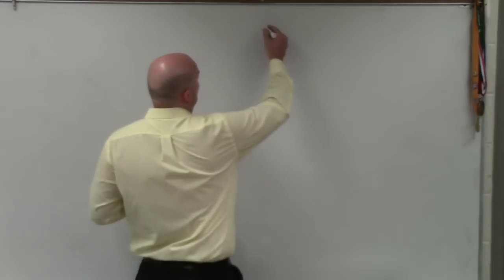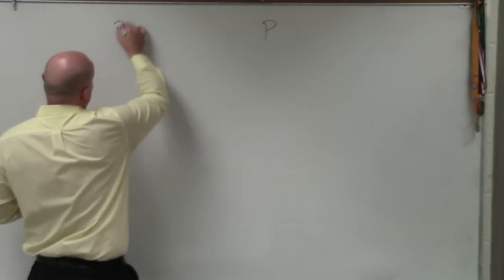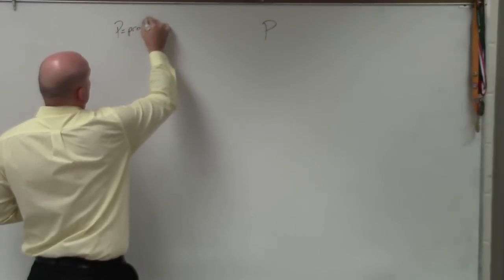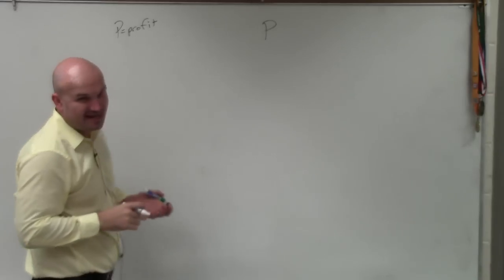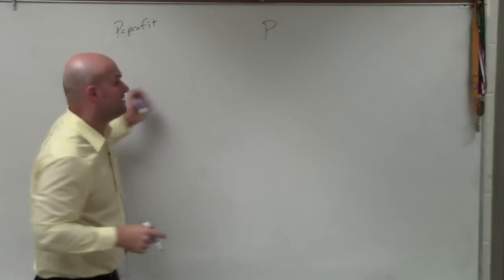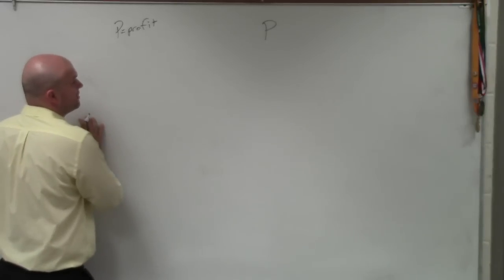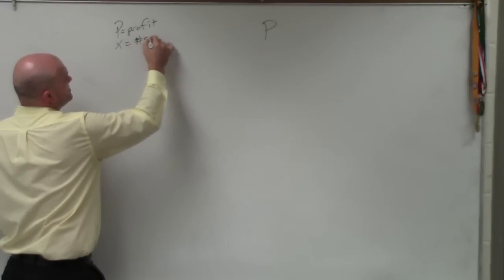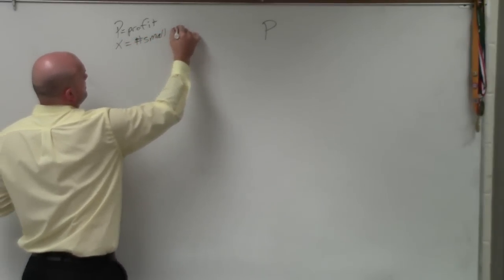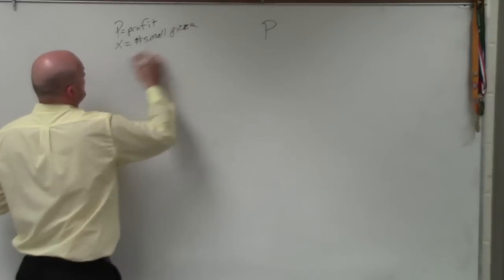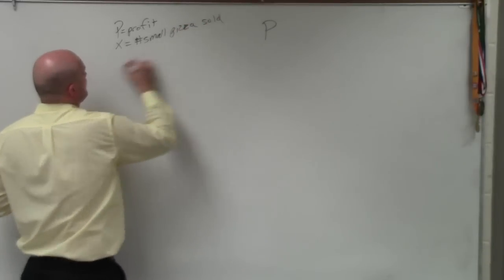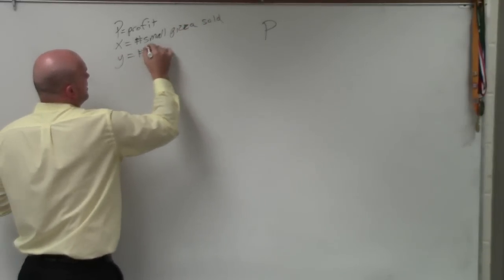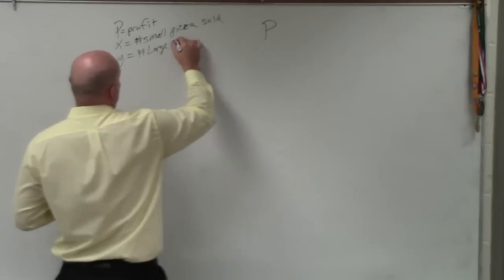When we're solving this, they're asking for the profit, but we don't know how many pizzas, how many small pizzas, or how many large pizzas they sold. But we do have an equation for the profit. So, I'm going to say P equals profit. We do have three kind of variables in this case. But for P, luckily, we already have an equation we can solve for it, which is called our objective function. So, I'll say x equals numbers of small pizzas sold. And y equals the number of large pizzas.